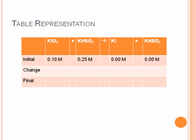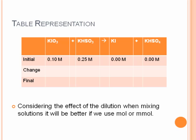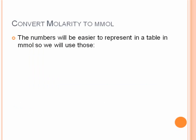So if we consider our table representation, initially we're adding 0.1 molar KiO3 to 0.25 molar KHSO3 with none of either of the products. However, considering there's a dilution effect, we're going to need to use moles or millimoles and then we'll convert back to concentration. We're going to use millimoles in this case because the numbers will be easier to handle in a table.